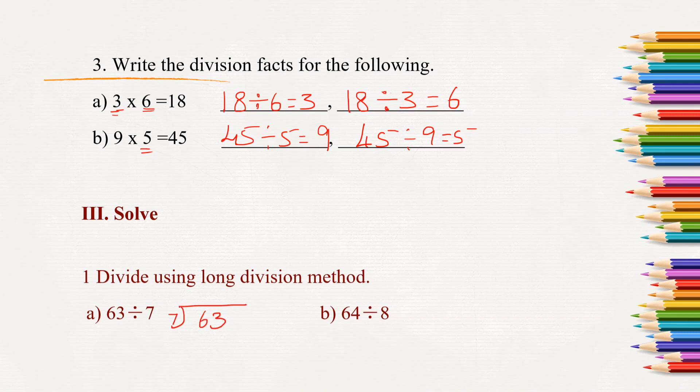Next question, solve. Divide using long division method. We have to use long division method to divide this number. So 7 what times is 63? 7, 9 times is 63. Here the quotient is 9 and the remainder is 0.